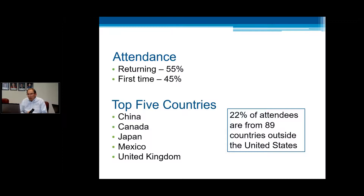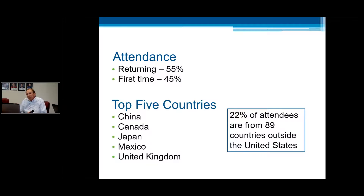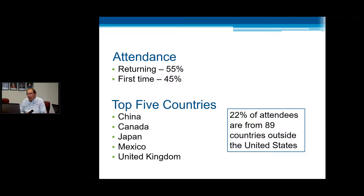Let me review the top five countries. As I said, we had 88 countries represented from outside the United States. The top five are China, Canada, Japan, Mexico, and the UK. And I should remind you that when we go south, as we're doing in 2018 heading to Orlando, we typically see an increase in attendance from Canada — Canadians looking for warmer climes at that time of year — and also from Latin America. We are marketing pretty heavily in Latin America, and we have a group going to Analytical Latin America coming up in the fall.